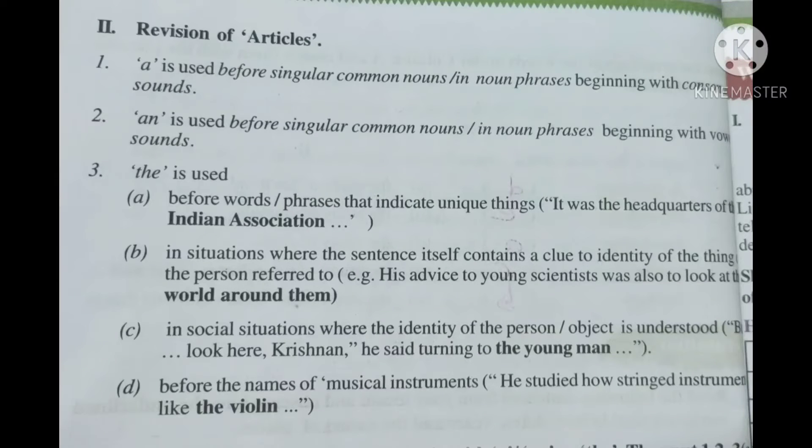'An' is used before singular common nouns in noun phrases beginning with vowel sounds. What are vowels? Vowels are A, E, I, O, U are called vowels. Before vowels we use 'an'.